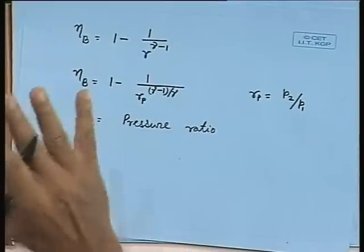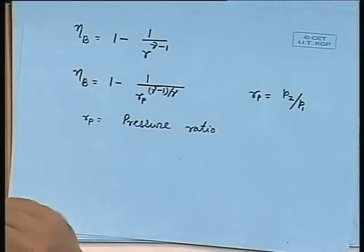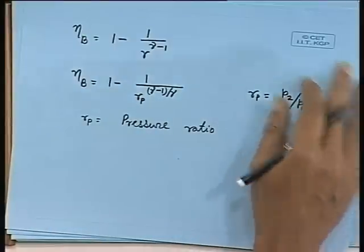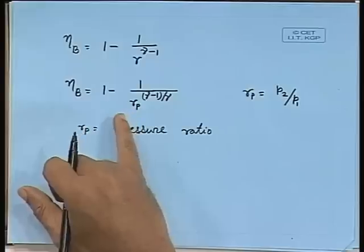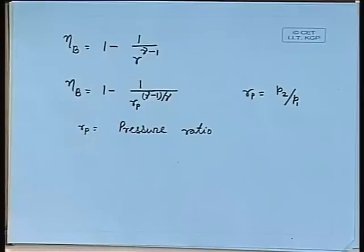The pressure ratio is very crucial in the Brayton cycle because the cycle efficiency depends on the pressure ratio. If we increase the pressure ratio, thermodynamically we get more efficiency. But what happens in actual practice is one of the key differences between the gas turbine cycle and the Rankine cycle.